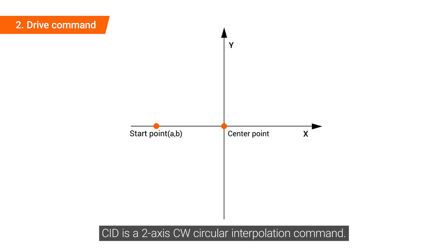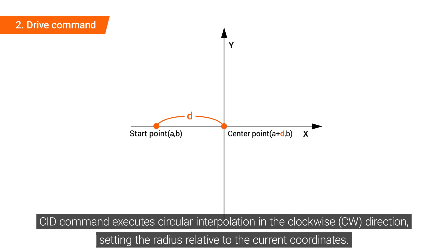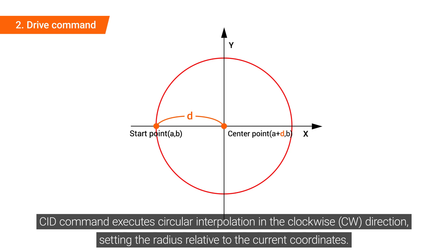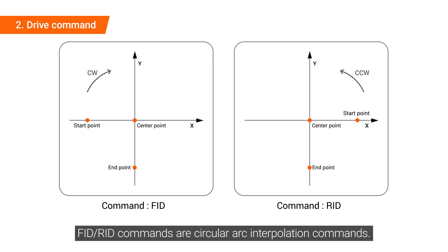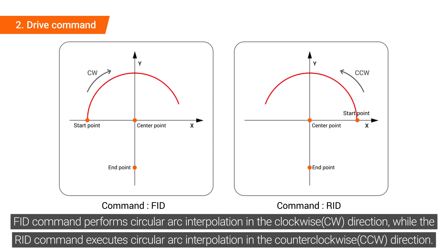CID is a two-axis CW circular interpolation command. The CID command executes circular interpolation in the clockwise direction, setting the radius relative to the current coordinates. FID and RID commands are circular arc interpolation commands: the FID command performs circular arc interpolation in the clockwise direction, while the RID command executes circular arc interpolation in the counterclockwise direction.